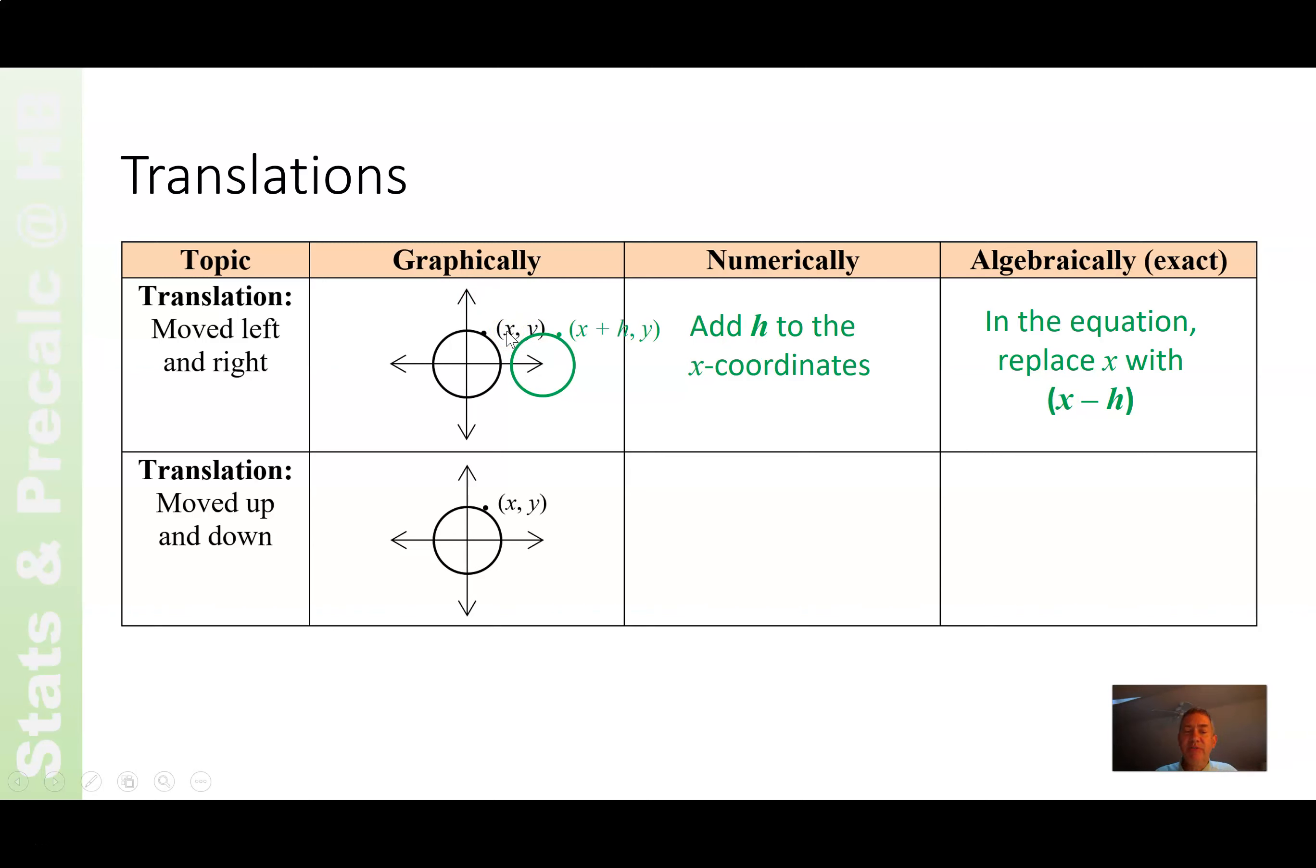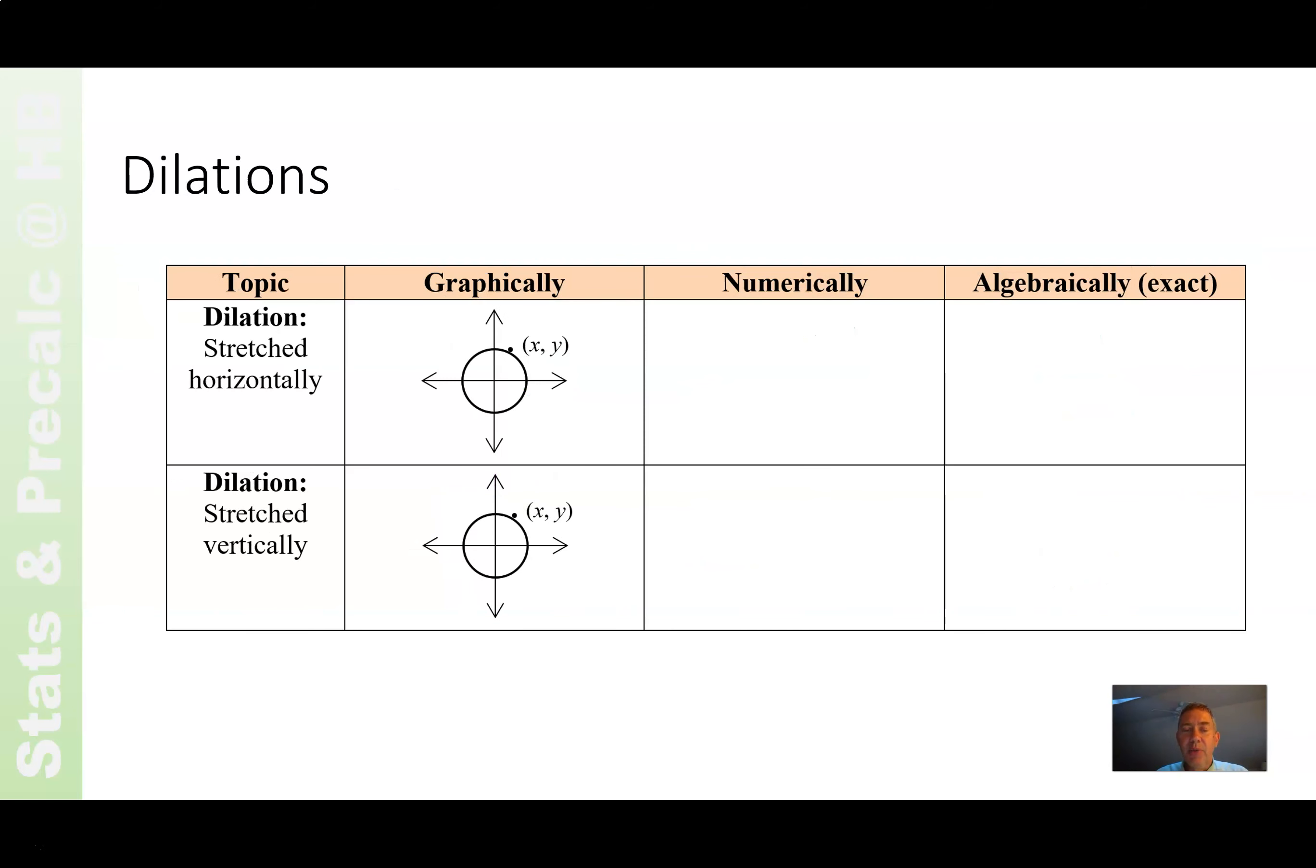That's how it works. If it's vertically, on the other hand, the x stays the same and the y changes. So you add k to the y coordinates. In the equation, you replace y with y minus k. So this is all pretty straightforward. Each one is by themselves, and you can see that they're exactly the same, just which one are you doing it to, x or y.